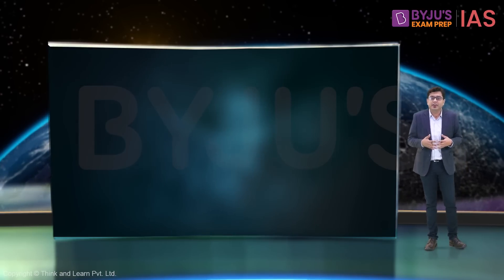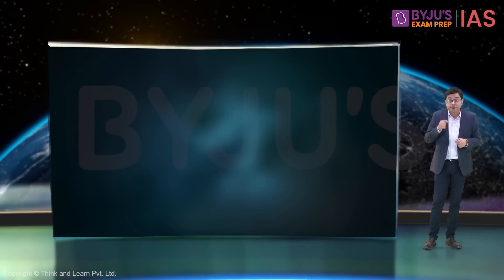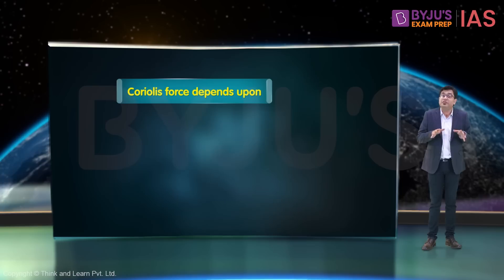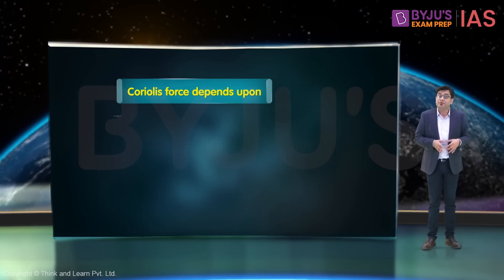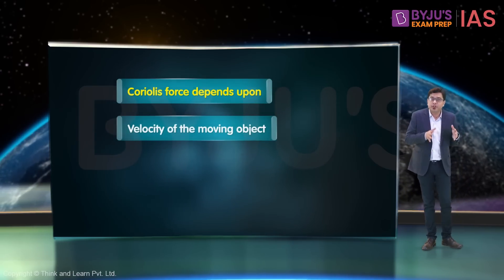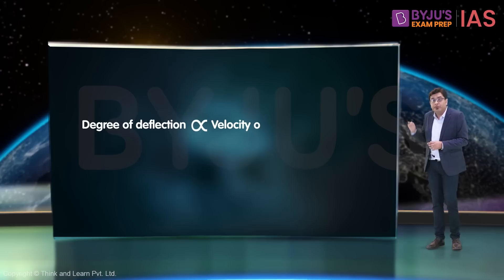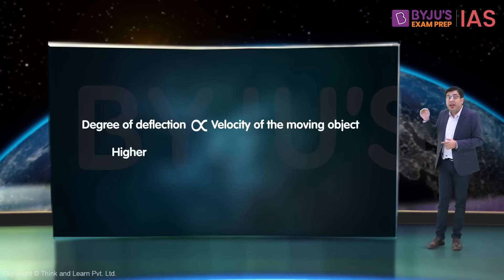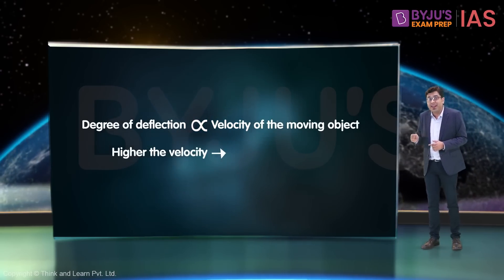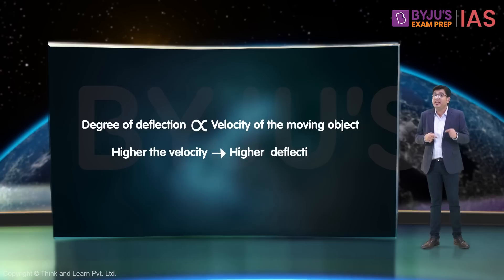There are certain factors on which the degree of deflection caused by the Coriolis force depends. First, is the velocity of the moving object. The degree of deflection is directly proportional to the velocity of the moving object. Meaning, higher the velocity of the moving object, higher will be the deflection.